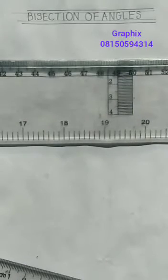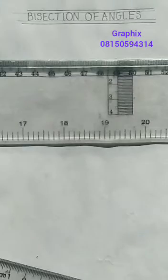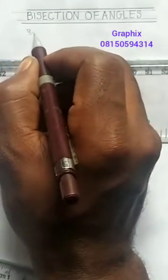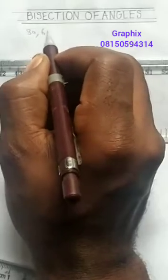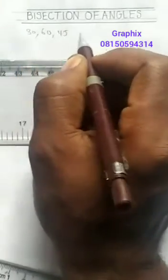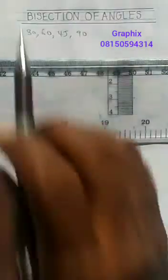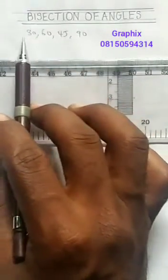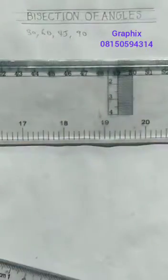Before you cover an angle, you must know that we have some special angles: angle 30 degree, angle 60 degree, angle 45 degree, and angle 90 degree. All these angles are special angles, and these are the angles at which all other angles are built upon.